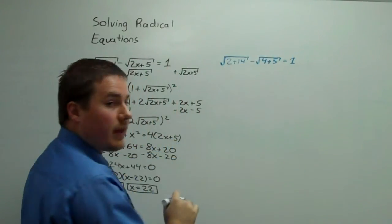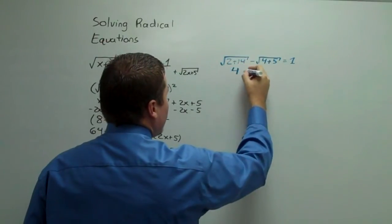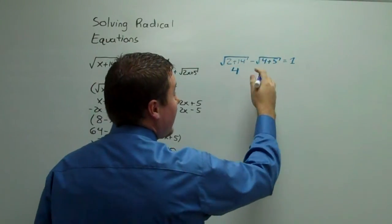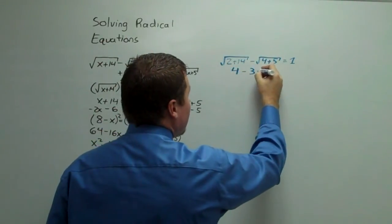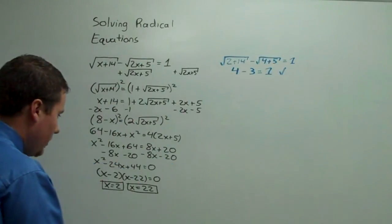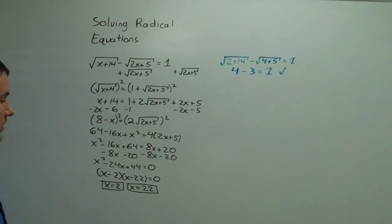16, the square root of that is 4. 4 and 5 is 9, the square root of that is 3. So 4 minus 3 equals 1. We have confirmation, so that is indeed a solution.